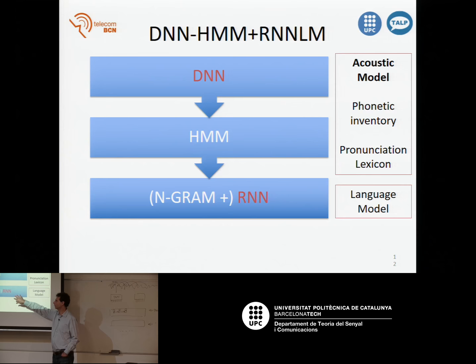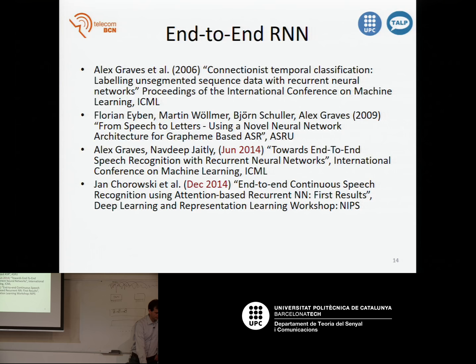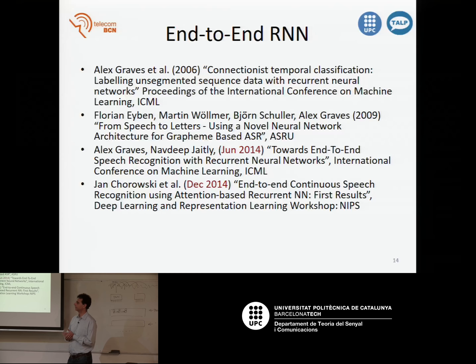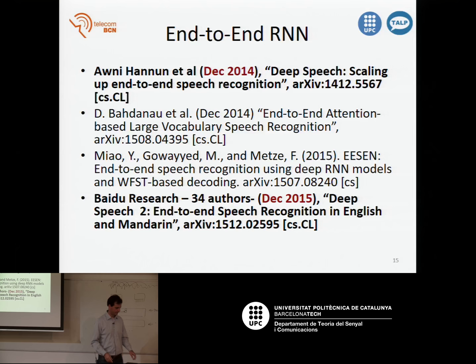You can also try to replace the language model block with a recurrent neural network, or combine the standard n-gram count-based language model with a recurrent neural network, though the complexity is also higher and you can have problems if you want a system for millions of persons. This work started maybe ten years ago, but the first real system with good performance — with a good language model and good results — was Baidu's Deep Speech 1 in 2014 and Deep Speech 2 in 2015.